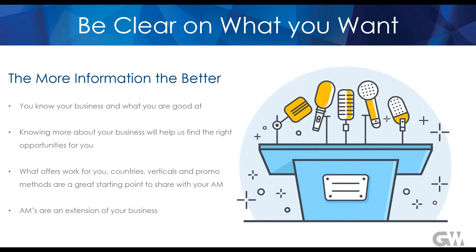As a publisher you should be able to identify where you're looking to promote and what offers, verticals, and promo methods work for you. If you're a new publisher it's a good idea to set up goals and focus on certain verticals and promo methods. When I get applications from new publishers I usually ask about the best country, verticals, and promo methods — this information is key for us to understand your business and find campaigns that work for you.